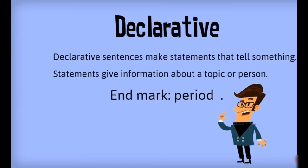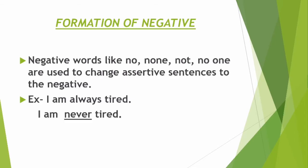First of all, let's talk about declarative sentences. Declarative sentences are also called assertive sentences. These are simple normal statements. Declarative sentences make statements that tell something — they just give information about any topic or any person. And their end mark is a full stop, which is also called a period.